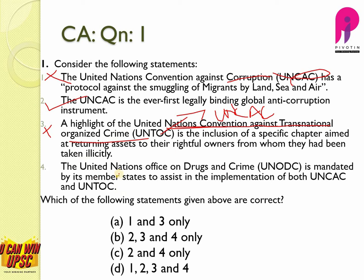So statement 3 is wrong. The fourth statement: the United Nations Office on Drugs and Crime is mandated by its member states to assist in the implementation of both UNCAC and UNTOC — yes, this is correct. So the answer to this question is C, statements 2 and 4. In statements 1 and 3, the organizations — the conventions — are reversed.